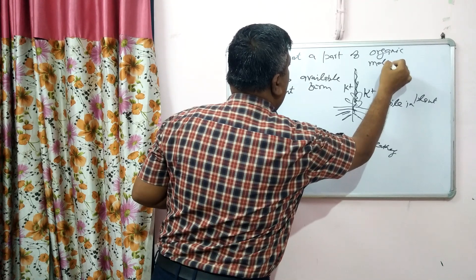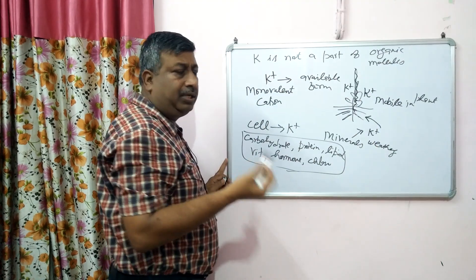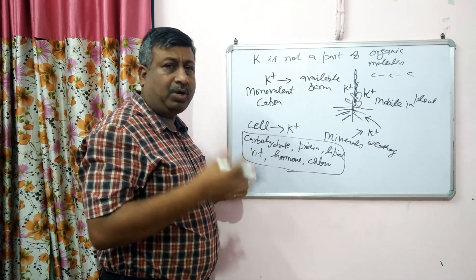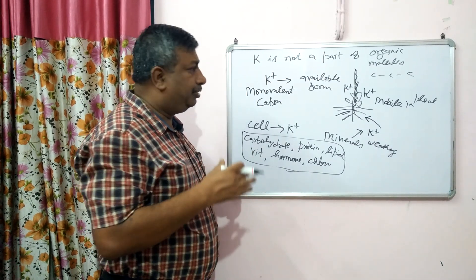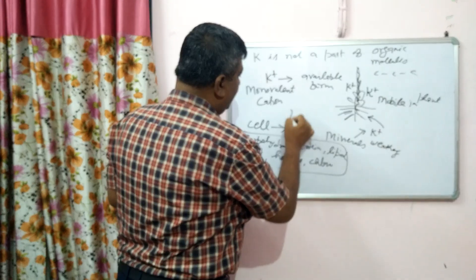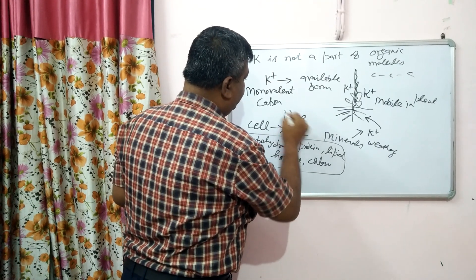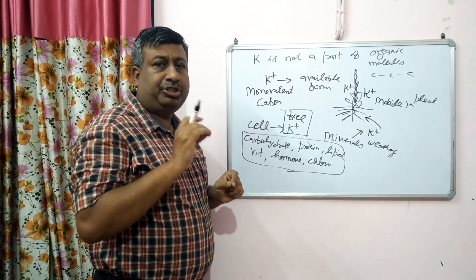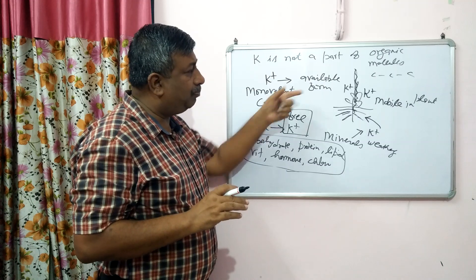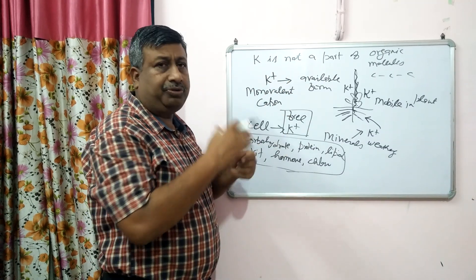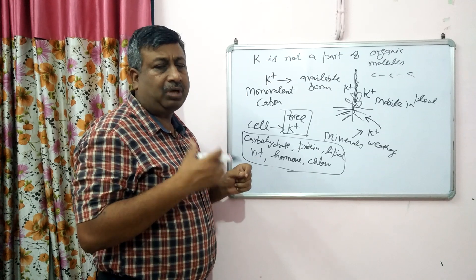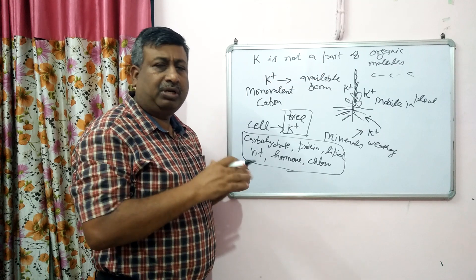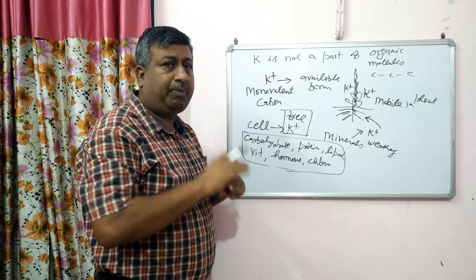So potassium is not a part of any organic molecule in the plant. Organic molecules mean carbon chain structures. It is not a part of carbohydrate, cellulose, hemicellulose, lignin — it remains free in the form of K+. It is not a part of cellulose, hemicellulose, glucose, fructose, chlorophyll, or nucleic acids. It is not a part of any organic structure.